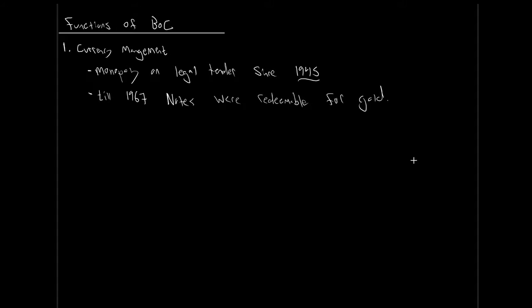So that's our first function of the Bank of Canada — ultimately to manage our currency, to manage our money supply altogether. Our second function is funds management. What exactly do we mean by that? They are the banker to the federal government. Just like Royal Bank of Canada might be your bank, the Bank of Canada is the federal government's bank. The federal government is dealing with billions of dollars — it would be pretty unfair for them to pick a private bank to hold all that money, as that would give immense market power and capital to one private bank, allowing them to dominate the others and create massive market problems.